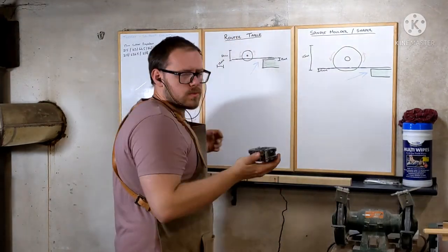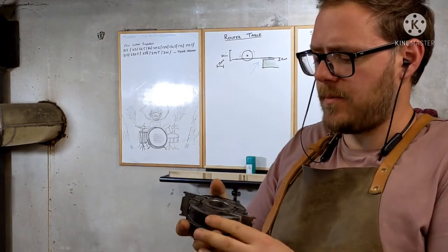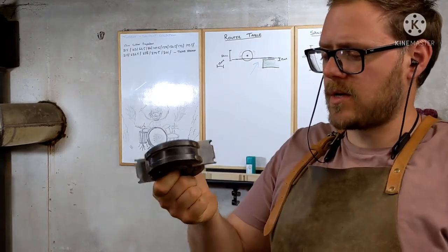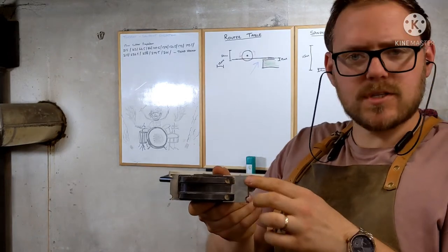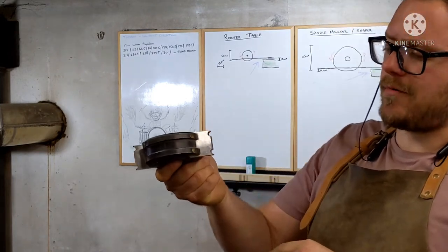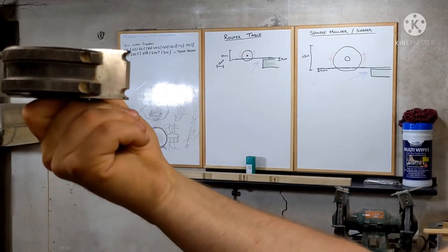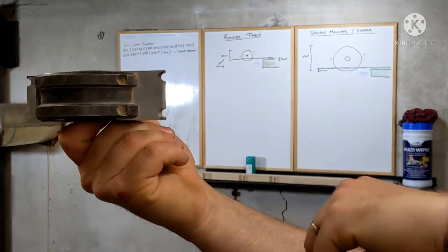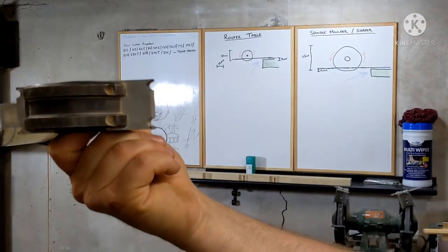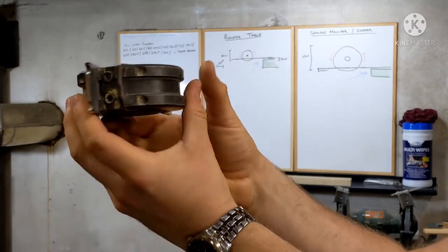This is what's called a euro block in the UK. Essentially it is a spindle molder cutter head. It's got a bore and can take various cross-sectional knives for cutting out different profiles. The reason you've got knives top and bottom is essentially you can get two uses out of a single set of knives between sharpening, so you can flip that over. This head spins like this.